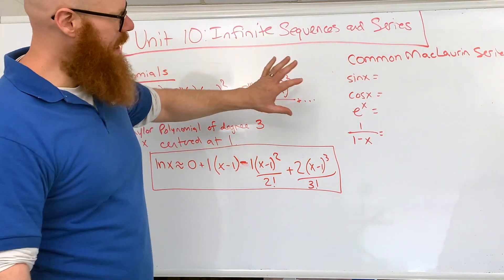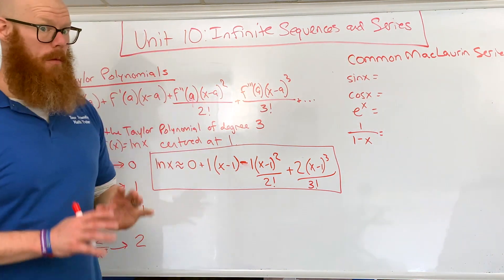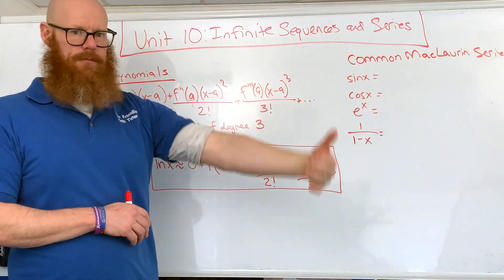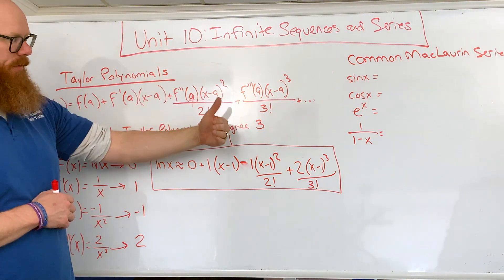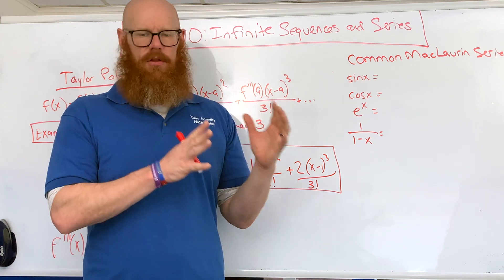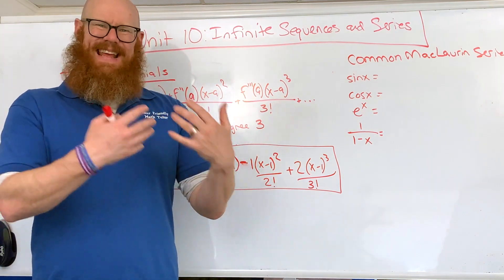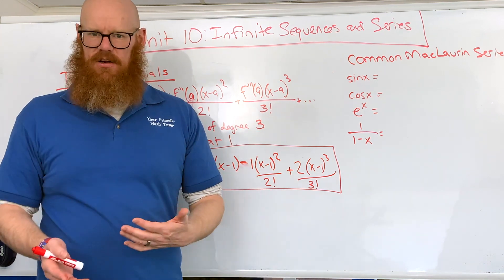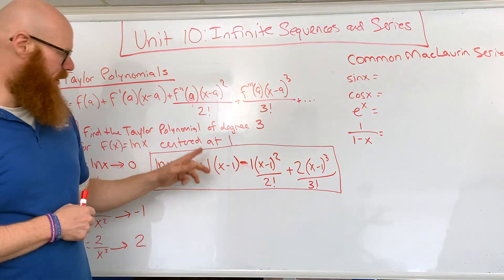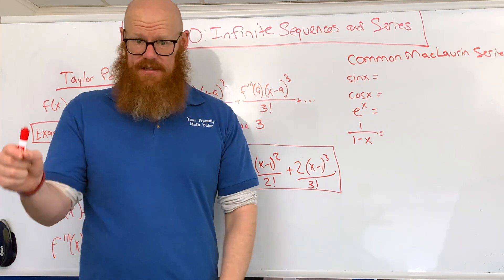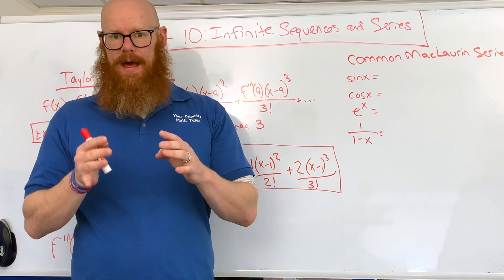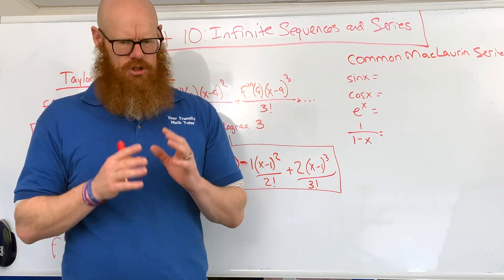Now let's look at McLaurin series. A McLaurin series is a Taylor series — the word "series" means it goes on forever, as opposed to a polynomial which stops at some point. The McLaurin part means it's any Taylor series that's centered at zero. So a McLaurin series is just a Taylor series centered at zero. When they tell you a Taylor series, they have to tell you where it's centered. A McLaurin series does not — it's inherently centered at zero. That's super important to remember.